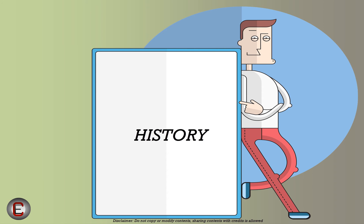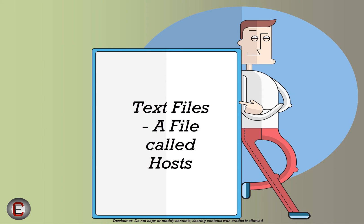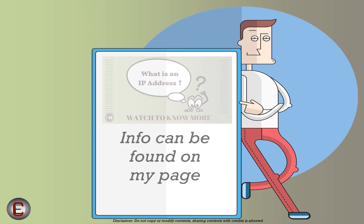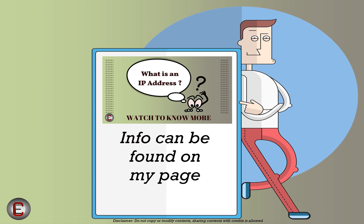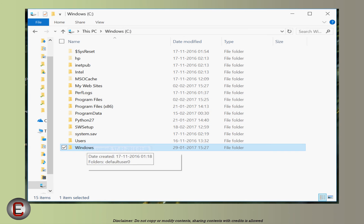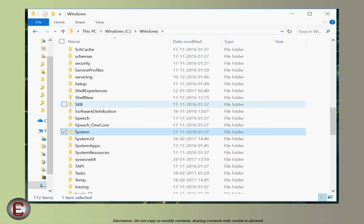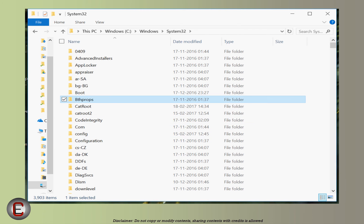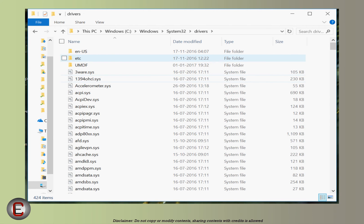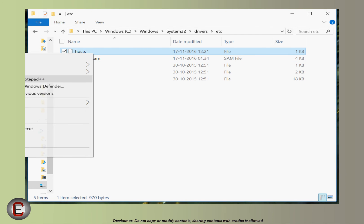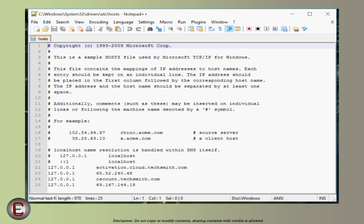Let's talk about a bit of DNS history — not much, just a little, because I don't want to bore you right at the beginning. DNS actually dates back to more than 30 years. Before DNS came into existence, we used to use text files to store name-to-IP address mapping. We still have this text file on your computer. If you're using Windows, go to the C drive, navigate to Windows, System32, Drivers, ETC, and Hosts — open it with Notepad. We still have a part of history lurking around.